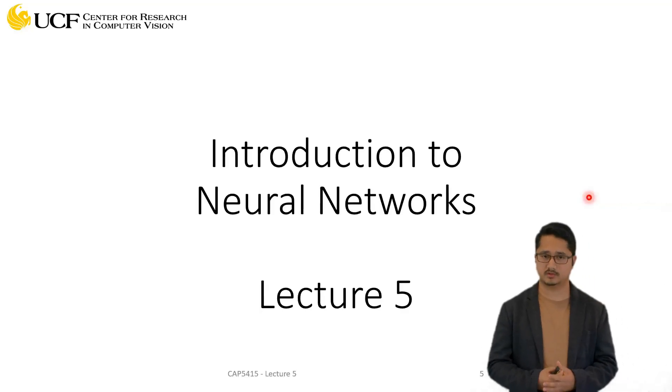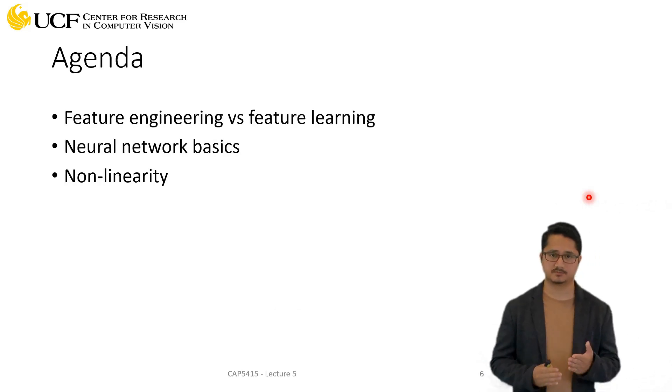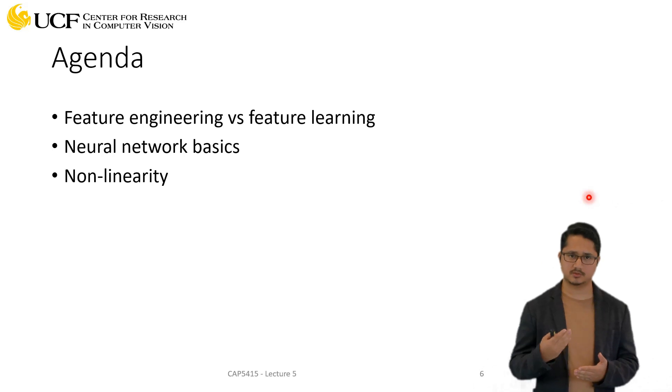Today's lecture is about neural networks. The agenda for this topic is: first, we'll give you some motivation for why exactly neural networks are required. In that aspect, we'll cover two different aspects - the first is feature engineering and the second is feature learning.